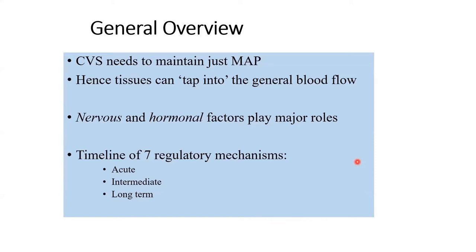We mentioned in the initial circulation lectures that amongst the main three or four tenets of circulatory control, one of those pillars is blood pressure control. We look at the importance of things by how much investment we do for a particular concept or mechanism. To control blood pressure within a certain range, the body employs several mechanisms spanning a very broad and impressive timeline. Blood pressure is so important because it is one of the main determinants of tissue perfusion — the whole point of circulation is to supply blood to organs.